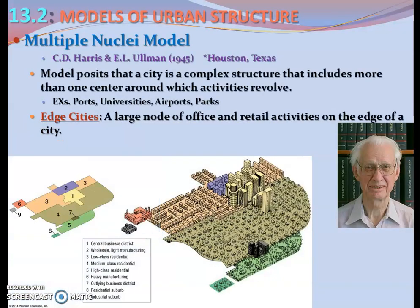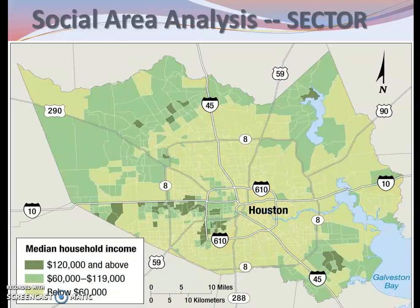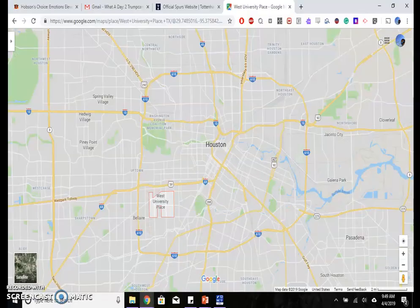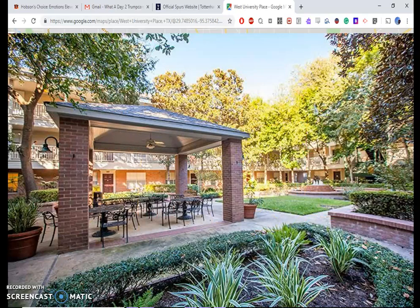The multiple nuclei model, by Harris and Ullman, says there is a central business district, but then you also have nodes established around the city — each with something specific that draws people there. You might have a university node, a medical node where all the hospitals are located, an airport node, or a parks district node. It makes the city more and more spread out instead of tightly packed. Houston, Texas is a good example of that. We'll pick up with another video to take us through the rest of Chapter 13, and then you're all done.